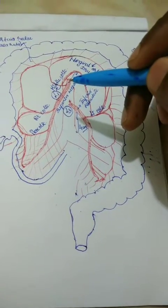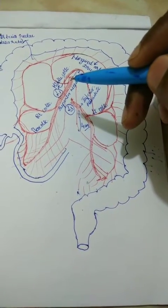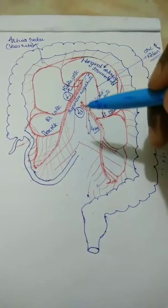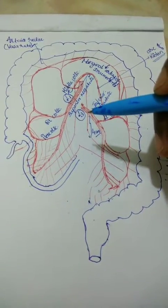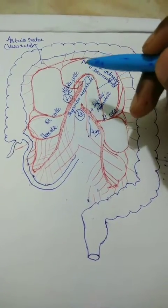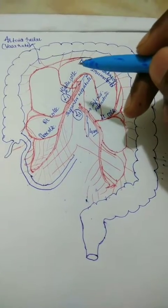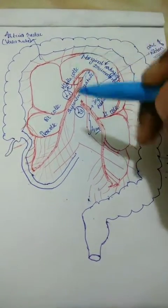The superior mesenteric artery is the second unpaired artery and the inferior mesenteric artery is the third unpaired artery. The first unpaired artery is the celiac trunk, which is not drawn here.